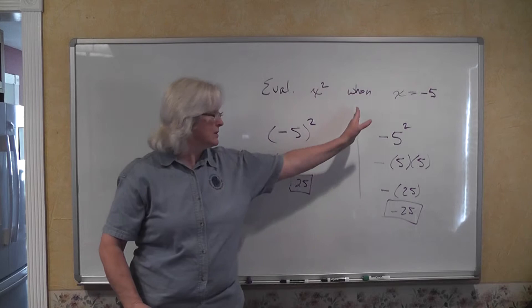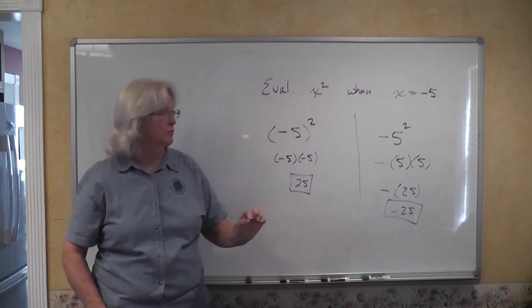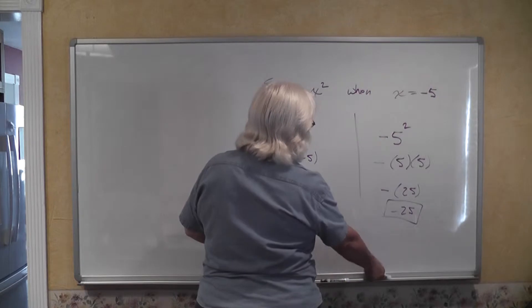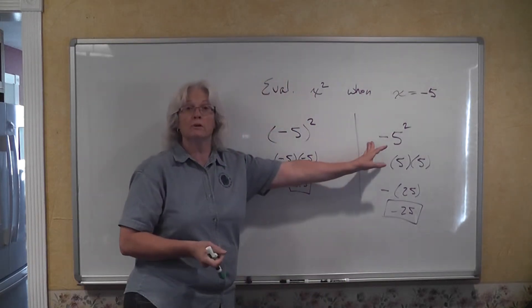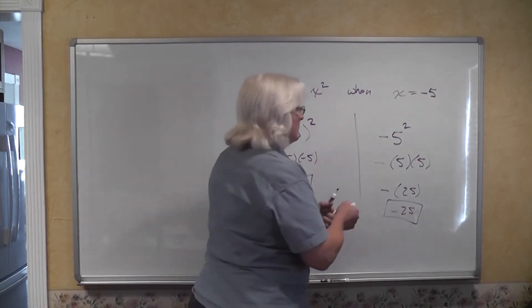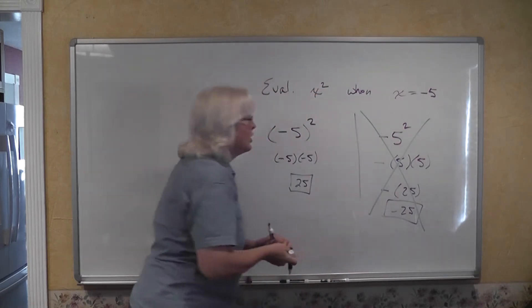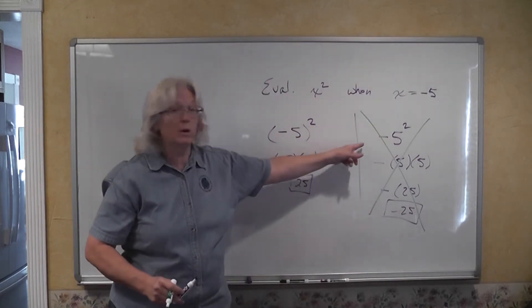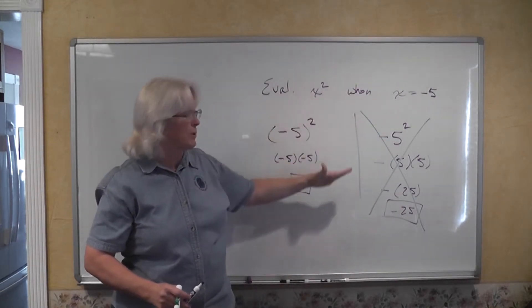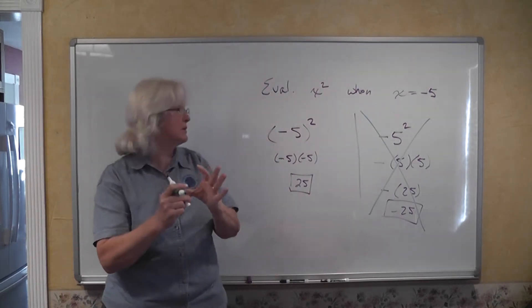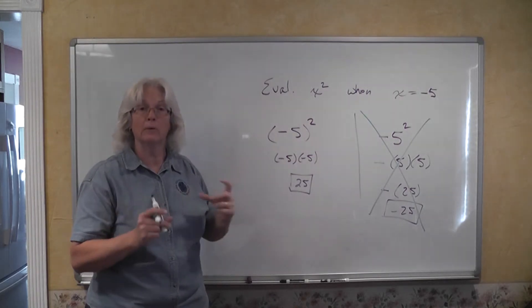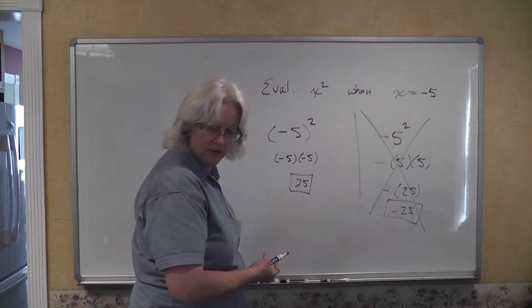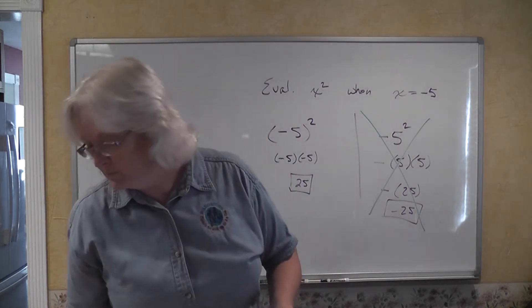Negative 5, that whole quantity, squared is a positive 25. The opposite of 5 squared is a negative 25. Both of these problems are solved correctly. Where the error comes in is in what you're being asked to do. That's wrong because your problem said evaluate x squared when x is a negative 5. This is a perfect illustration of why I say get in the habit of when you substitute, enclose whatever values you're substituting in parentheses. It just makes it much more clear for you what you are actually doing.